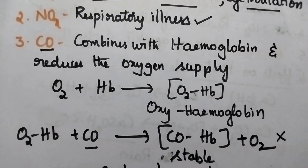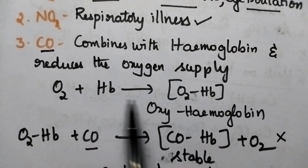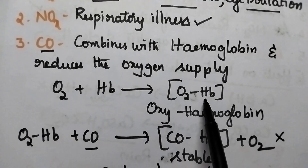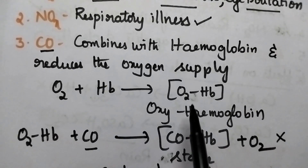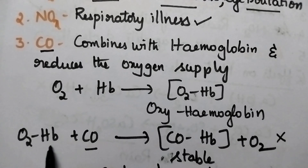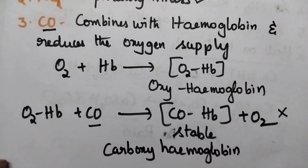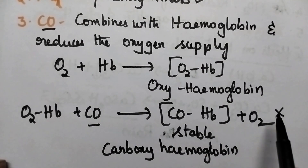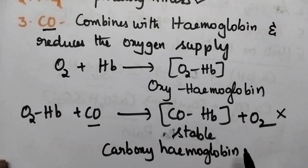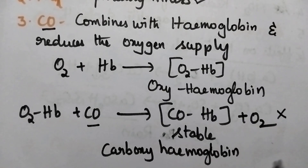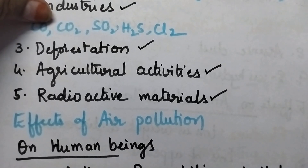Let us see the functioning of hemoglobin. Initially, hemoglobin combines with oxygen, resulting in the formation of unstable oxyhemoglobin, which is carried to the cell. At the cell, it undergoes dissociation and supplies oxygen. But whenever carbon monoxide is available in the air, hemoglobin has a greater affinity towards carbon monoxide, resulting in the formation of carboxyhemoglobin, leaving oxygen. As a result, the supply of oxygen to each and every cell is stopped. This is the toxicity of carbon monoxide. If the concentration of carbon monoxide is too high, it may lead to the death of the person.